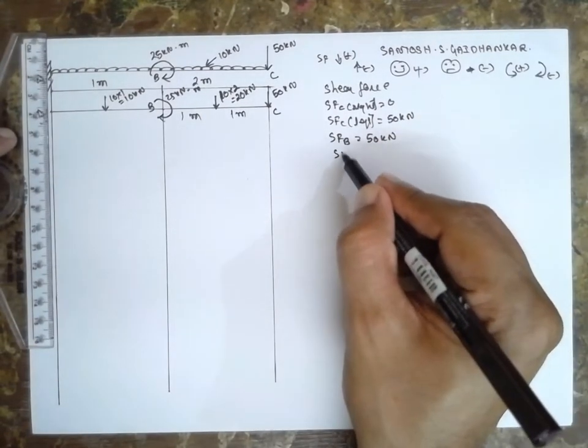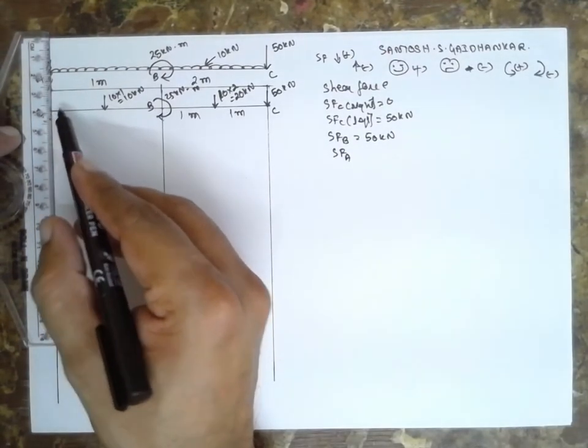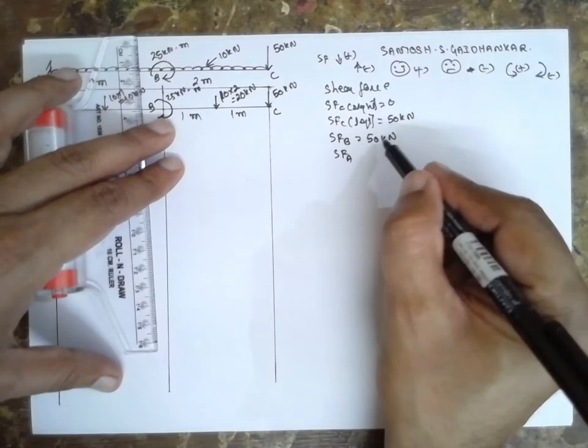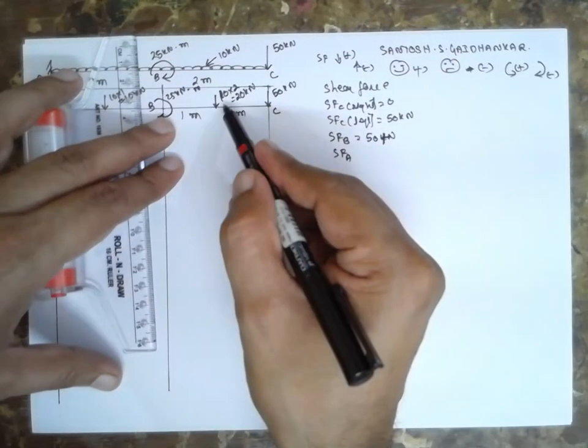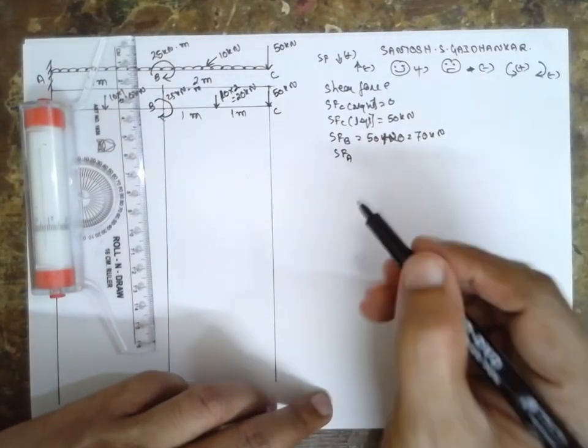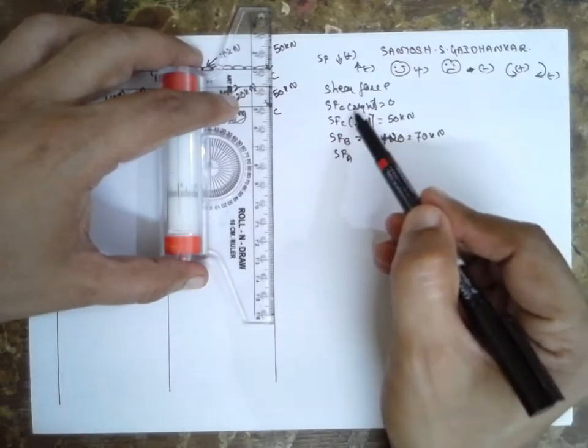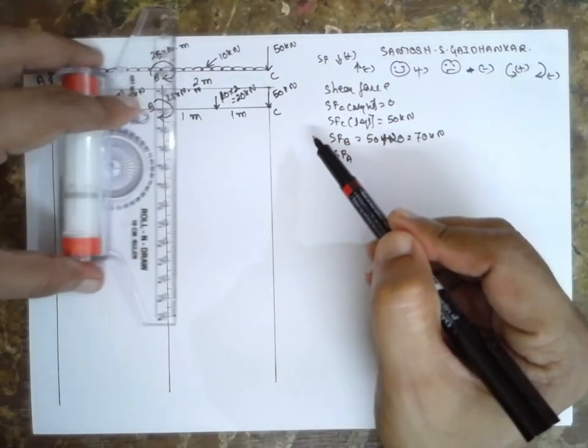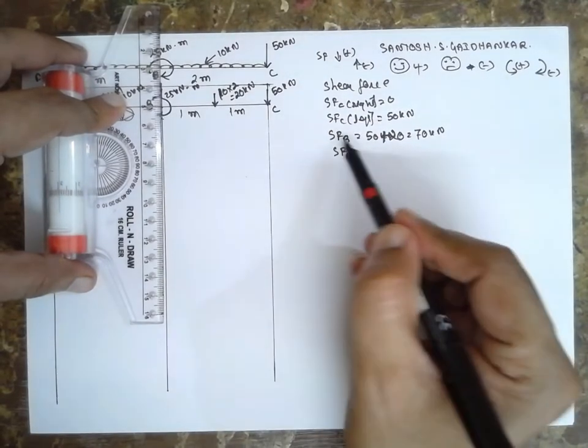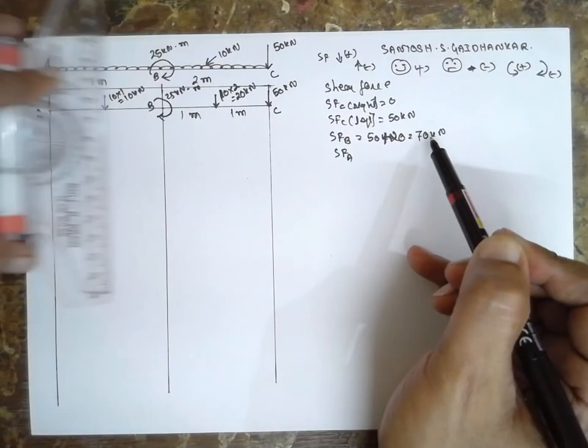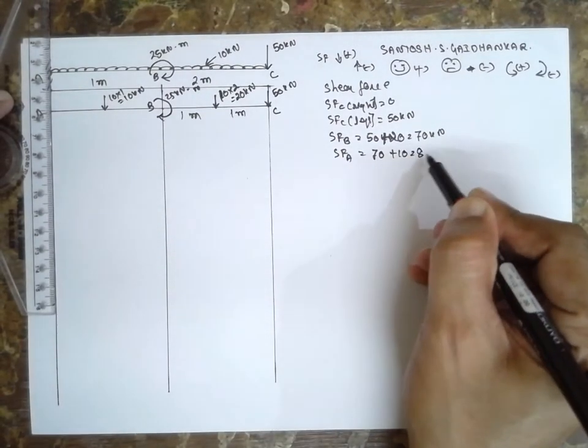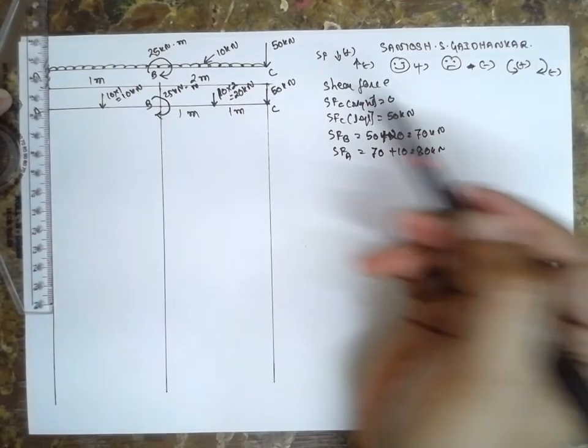Next at A, a single letter because there is no load. Single letter and no load. This is 50. I made a mistake here. This is 50 plus 20. 50 plus 20, 70 kN. First it was right side, I will consider as 0. Left side is 50 plus 20 at B. At B, because the couple does not affect on shear force, B single letter, 50 plus 20 is 70. At A, single letter, I will use previous value, 70 plus 10 is nothing but 80 kN. Or you can do 50 plus 20 plus 10, you will get the same answer.